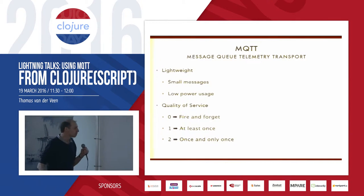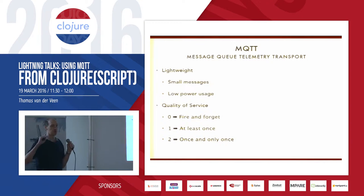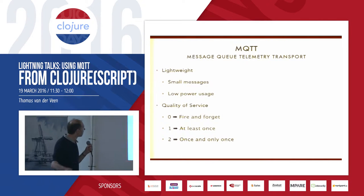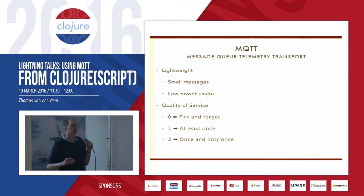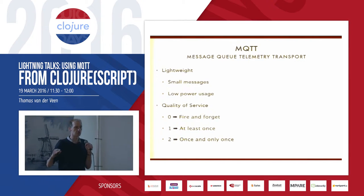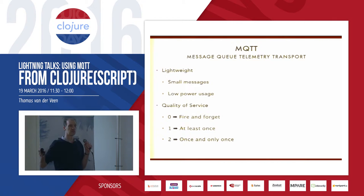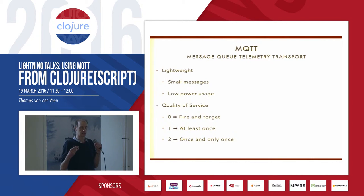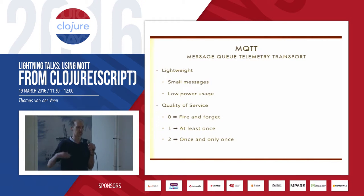Message Queue Telemetry Transport. It's a very lightweight pub-sub protocol originally developed by IBM and another company, designed for very lightweight operations. The original use case was oil pipelines through Siberia, where you want to measure flow to detect leaks using satellite connections and solar power. Low power, small messages. They realized if they could save a byte per message, it would save them a million dollars a year on their satellite bill.